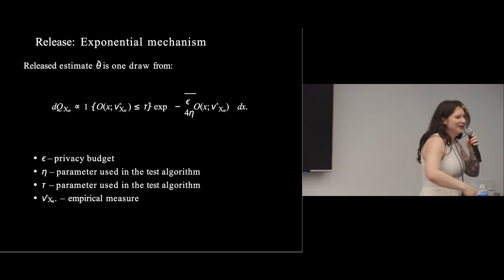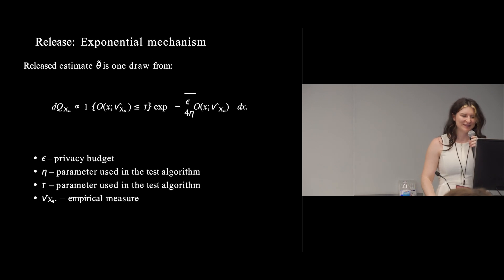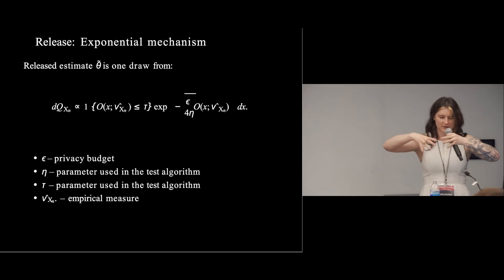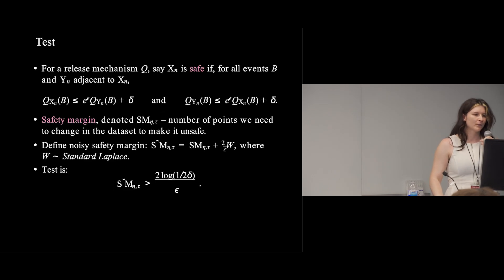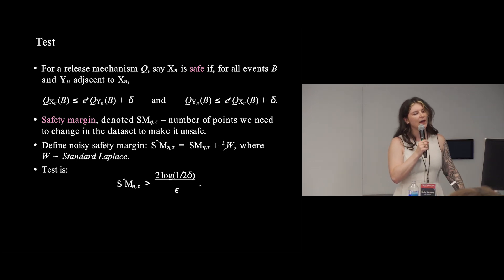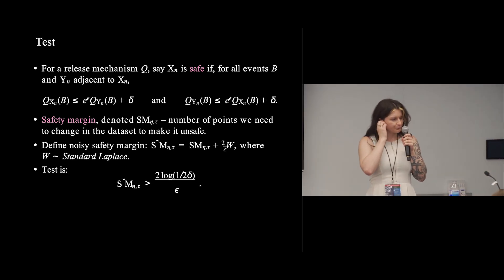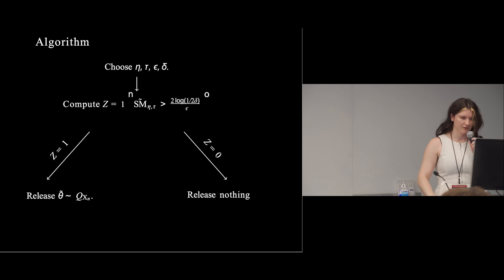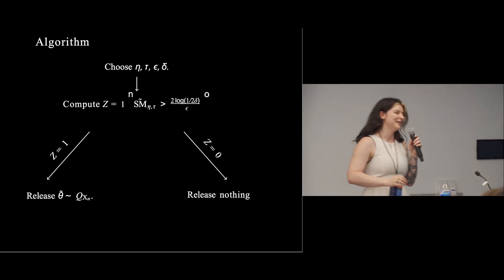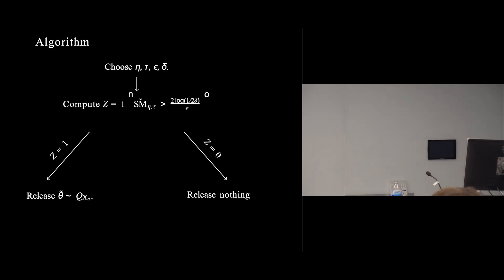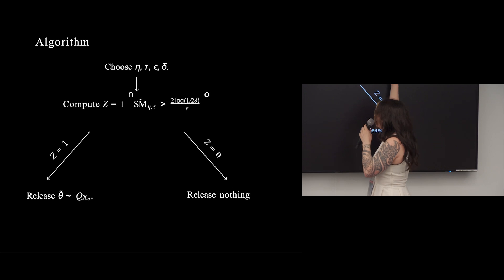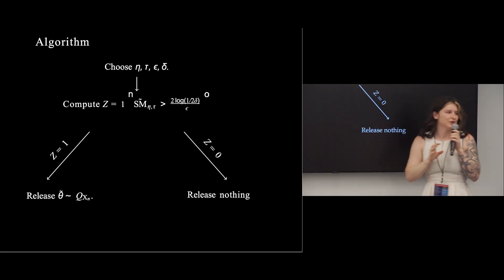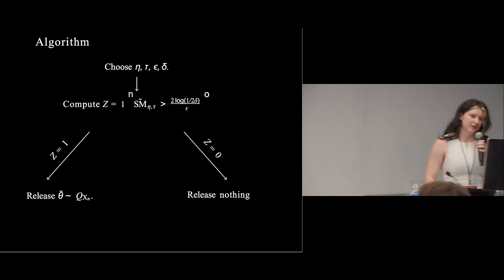The noisy release uses the exponential mechanism: construct a density concentrated around the non-private median and draw from it. The test checks how many points it takes to change the outlyingness function substantially — if it takes many points, we pass the test. The algorithm computes a noisy safety margin indicator; if it equals one, release the draw from that density; otherwise, lose epsilon-delta of privacy budget.